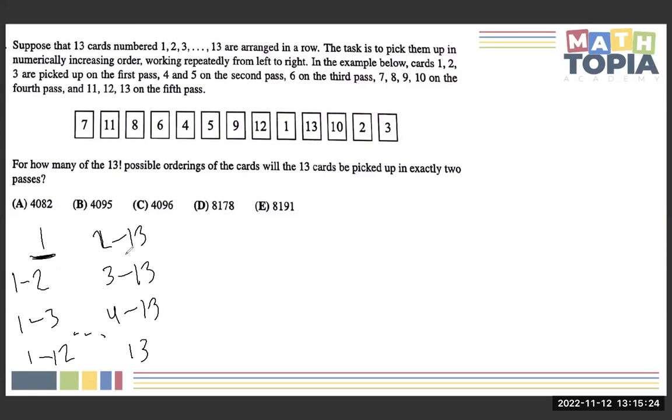If we consider this to be a group of one card and this to be a group of 12 cards, we can just think about this as 13 choose 1, because whatever card we choose, let's say we chose this card to be 1, then the other cards would have to just be the numbers 2 through 13 in sequence, because we'd have to pick them up all in one go.